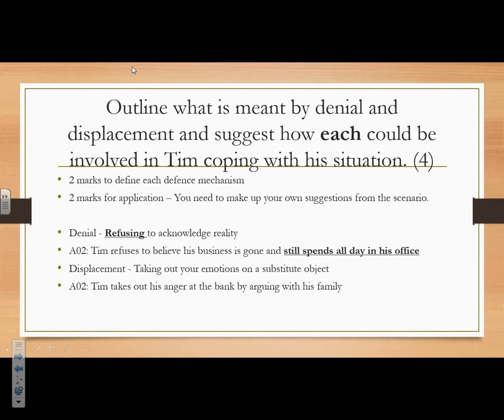Outline what is meant by denial and displacement and suggest how they could be improved in Tim's situation. The scenario itself didn't overtly demonstrate any examples of displacement or denial — you had to create that information yourself. We think that's unlikely to come up in the real exam. If you get a question like this where you need to make up the answer, check it very carefully. There are two marks for defining each defence mechanism and two marks for application.